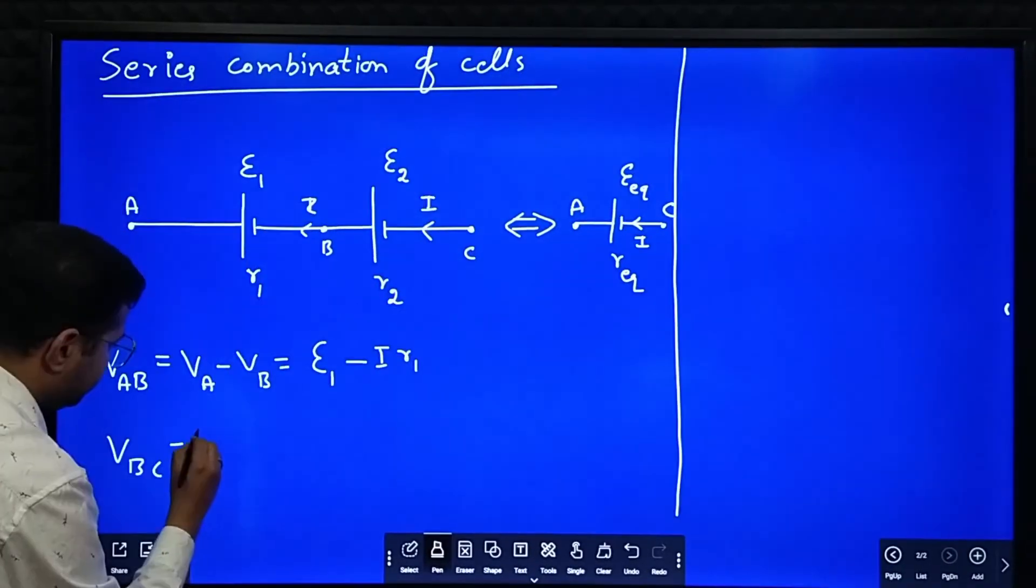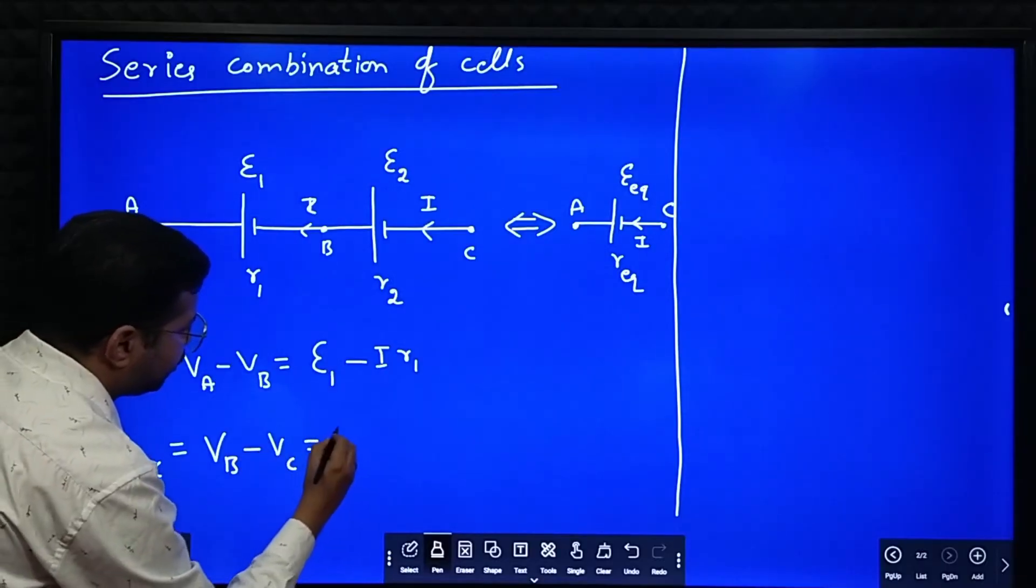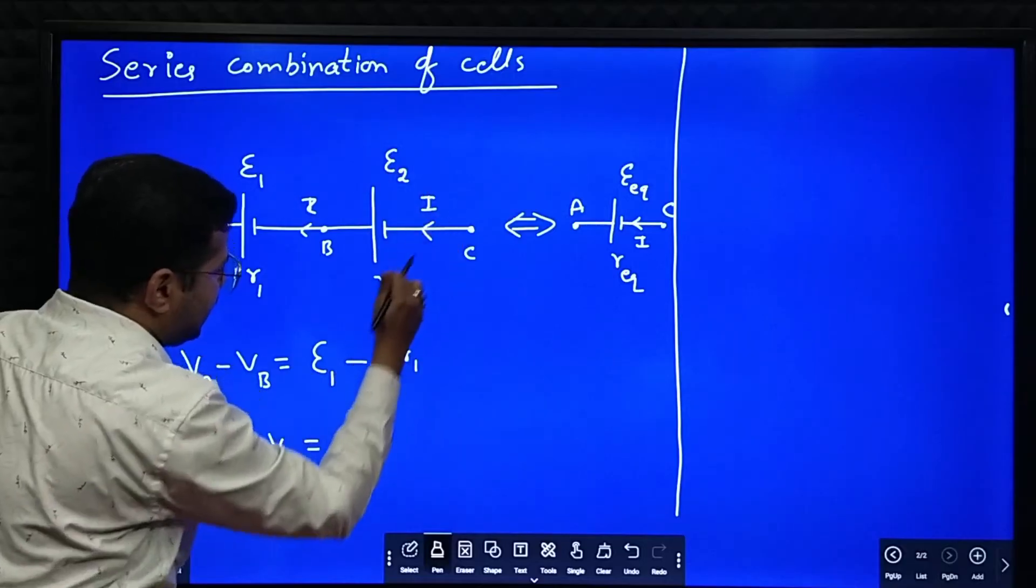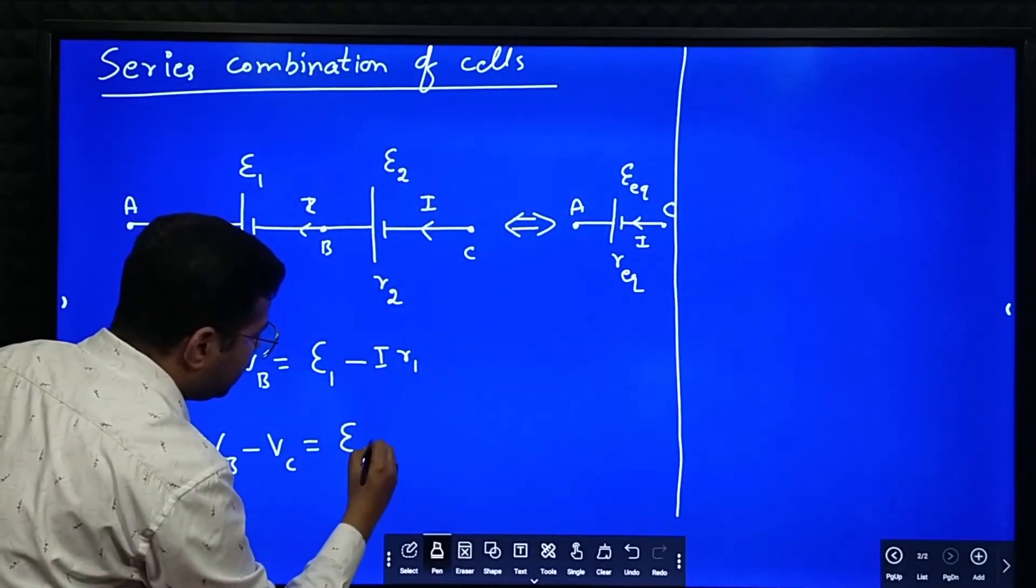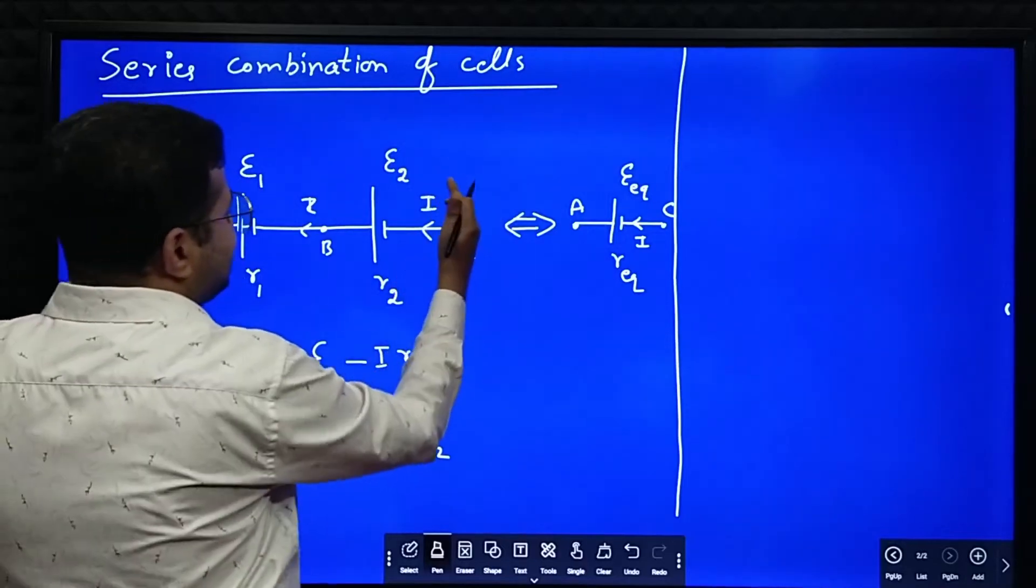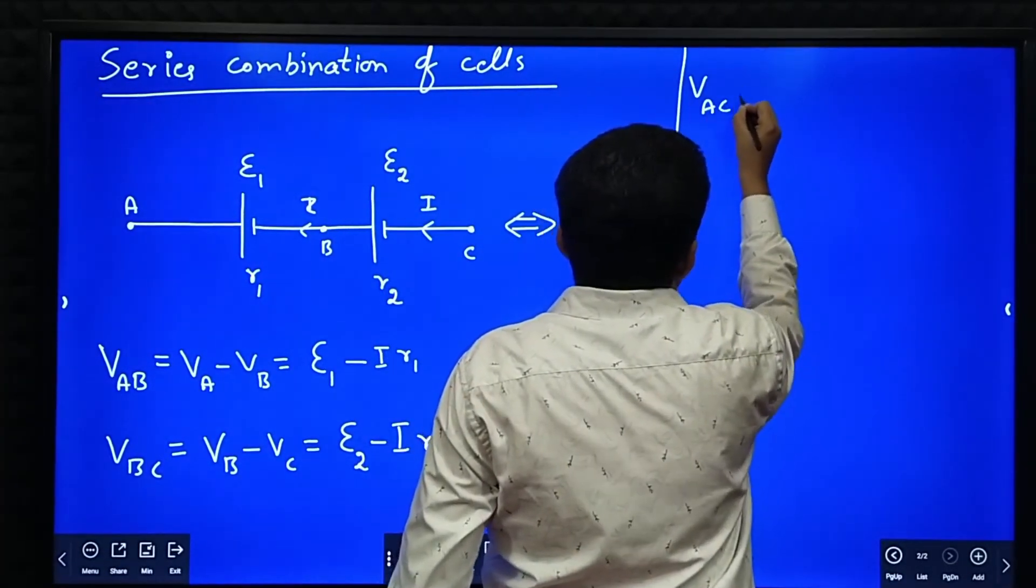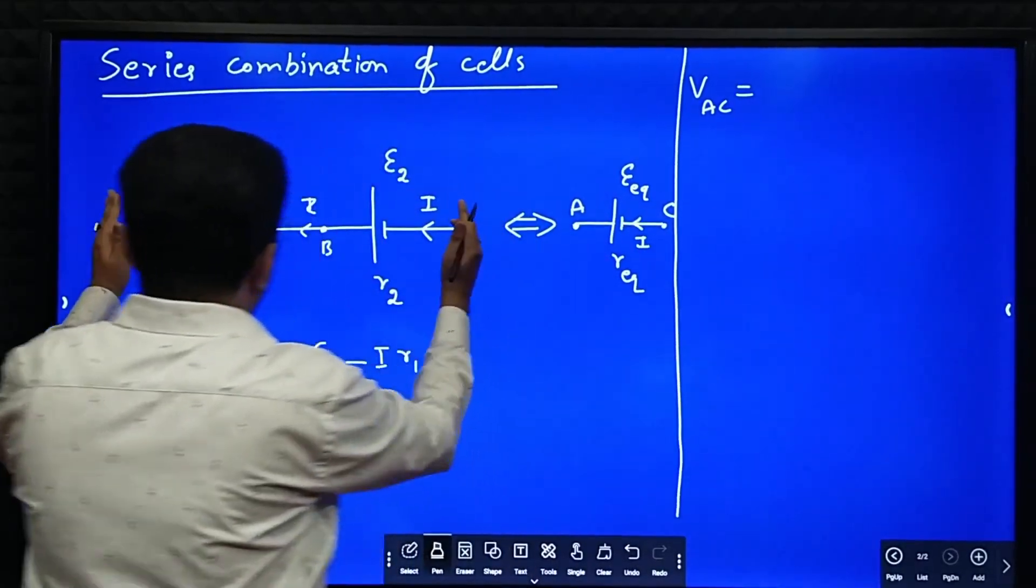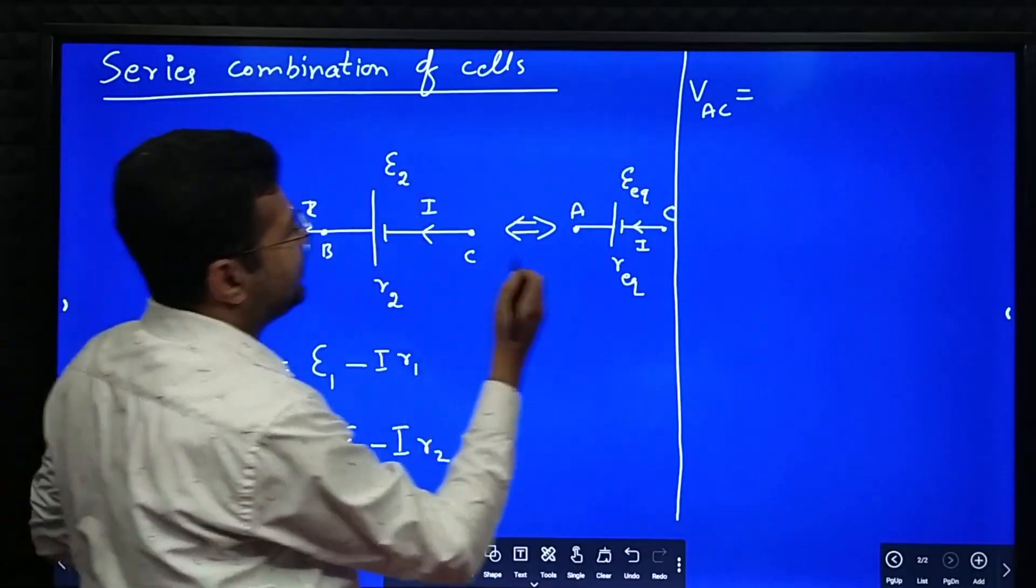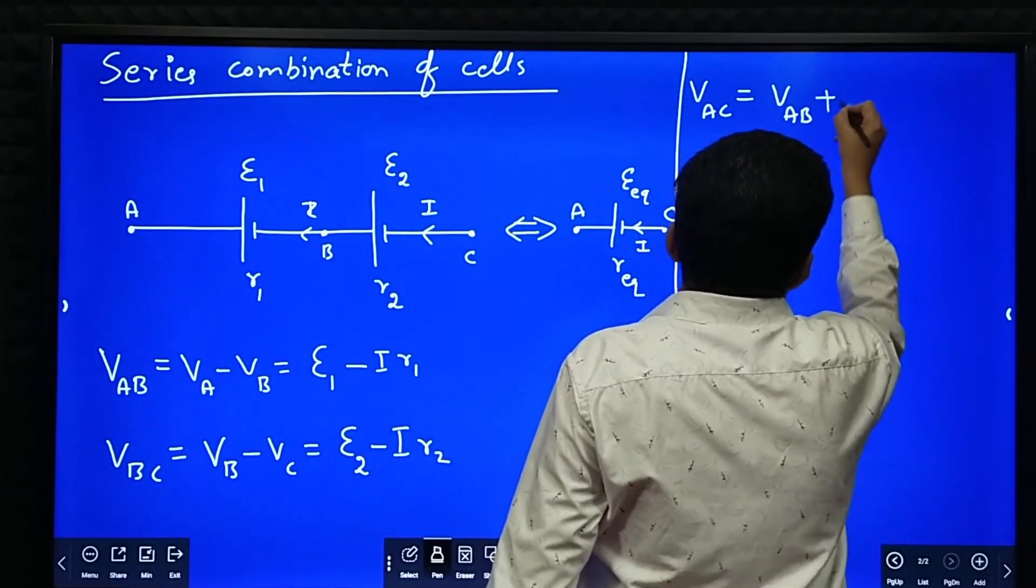Next, what is VBC? VAC is equal to VAB plus VBC.